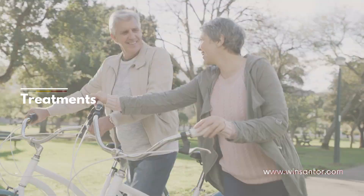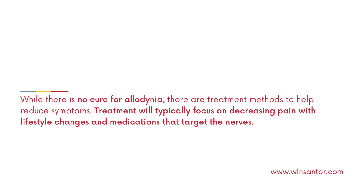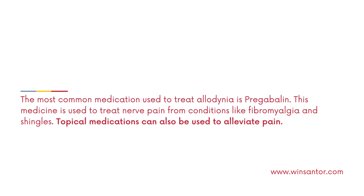Treatments: While there is no cure for allodynia, there are treatment methods to help reduce symptoms. Treatment will typically focus on decreasing pain with lifestyle changes and medications that target the nerves. The most common medication used to treat allodynia is pregabalin, which is used to treat nerve pain from conditions like fibromyalgia and shingles. Topical medications can also be used to alleviate pain.